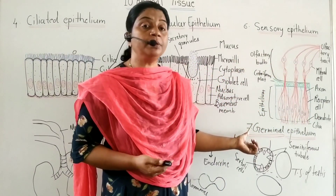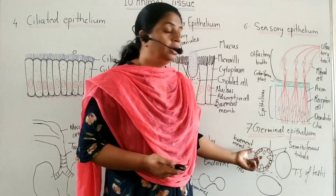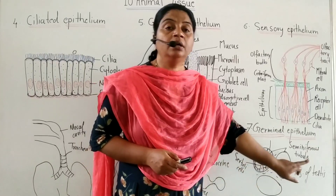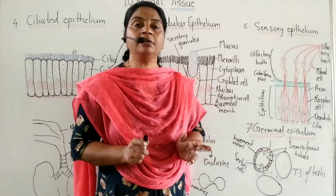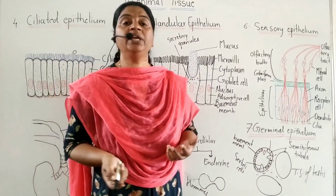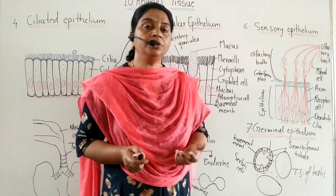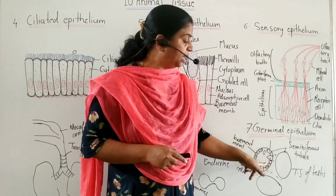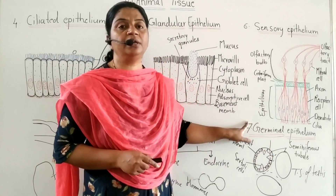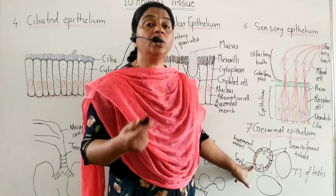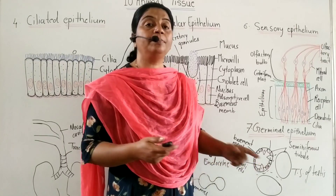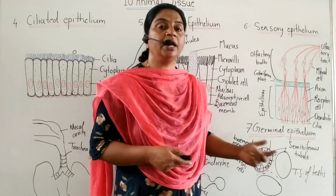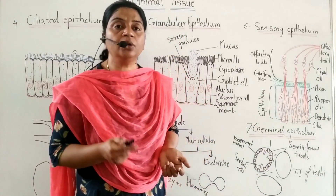The last type of simple epithelium is germinal epithelium. Germinal epithelium lines the seminiferous tubules of the testes, which is a male reproductive organ. The ovary, which is the female reproductive organ, is also internally lined by germinal epithelium, as are the seminiferous tubules. These cells meiotically divide and produce haploid gametes — males produce sperm and females produce ova.